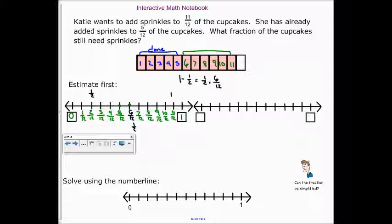Got zero to one. Here, we've got one-twelfth. Two-twelfths. Three, four, five. Okay. That's how much she is done. We need to get all the way to, at this point right here, eleven.